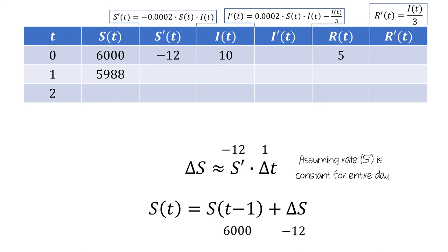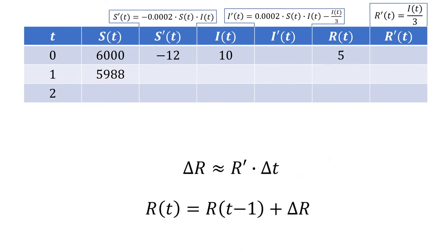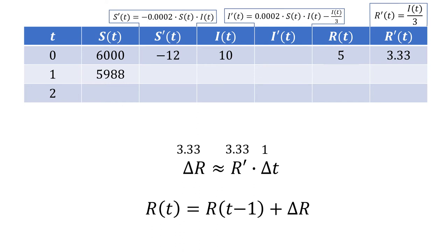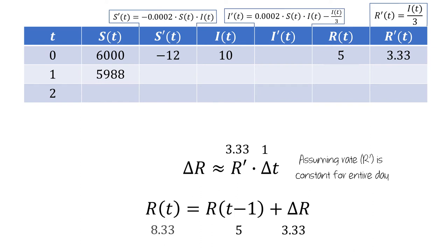Next, let's look at the values for R and R'. We'll compute R'(t) using the differential equation — we'll divide the value of I by 3 to get 3.33 people per day for R'. We're going from 0 to 1 day, so delta t is 1 day. The rate at t=0 is 3.33 people per day, so delta R is approximately 3.33. This is approximate because we're assuming that the rate R' is constant for the entire day. Then we can use delta R along with R(0) to get that there are 8.33 removed individuals at t equals 1.